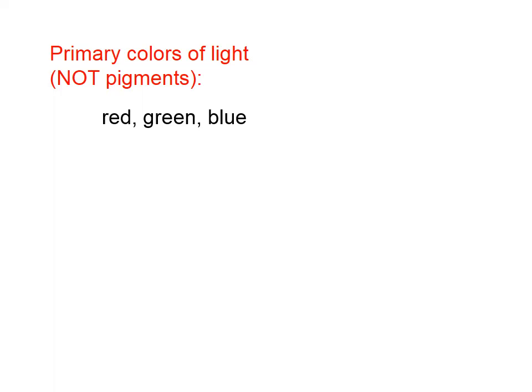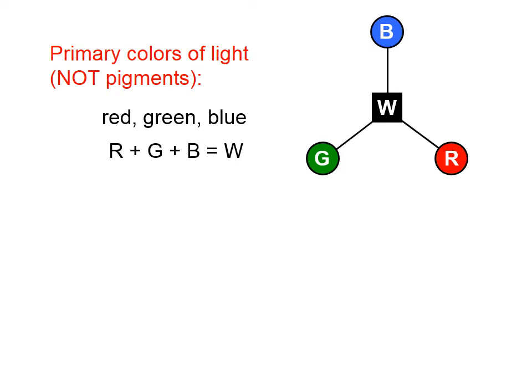The primary colors of light, not pigments, are red, green, and blue, and we talked earlier that red plus green plus blue gives us white light. Light is additive.